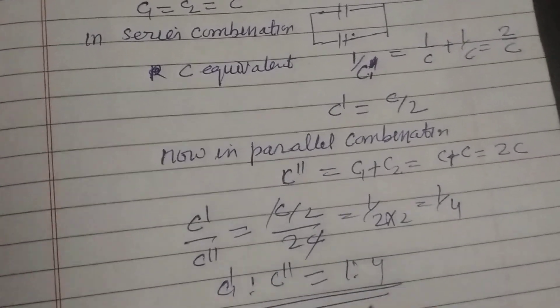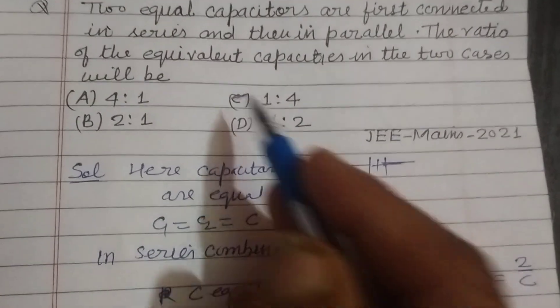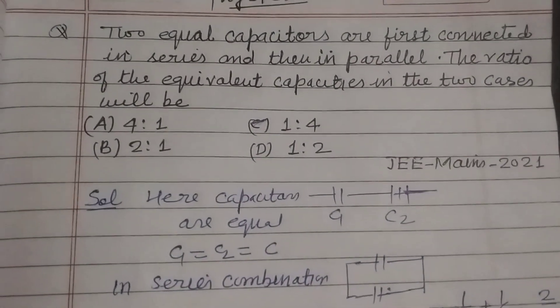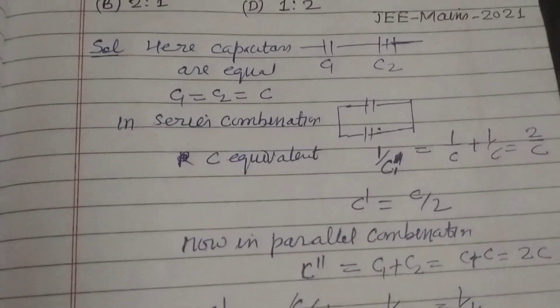So the answer is 1 ratio 4, which is found in option C of this question. I hope you got it. Please like the video, subscribe the channel. Thanks.